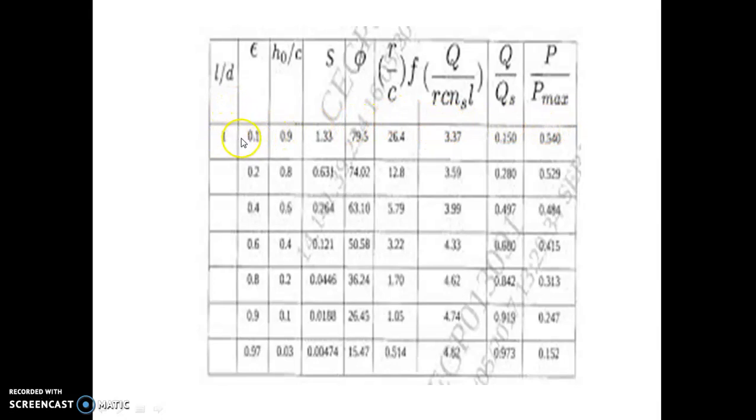First of all we calculate the L by D ratio and then we calculate the Sommerfeld number. If L by D ratio is 1 and Sommerfeld number is 0.121, then we consider this row and by taking the value for different variables or parameters we can find out the required parameter.